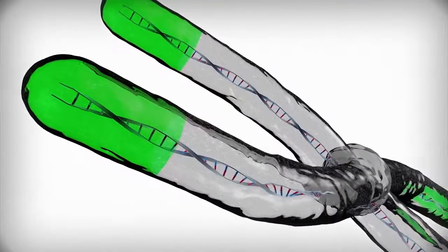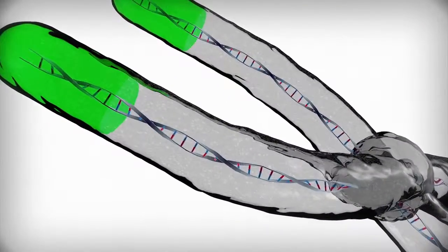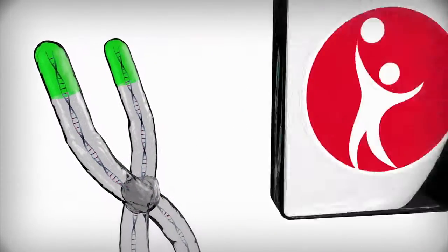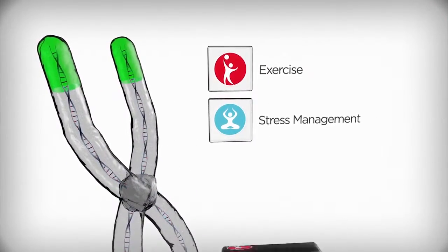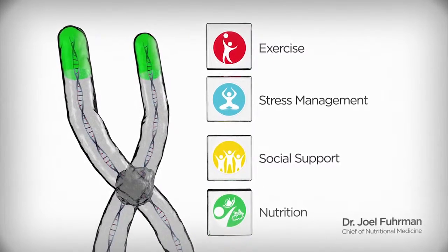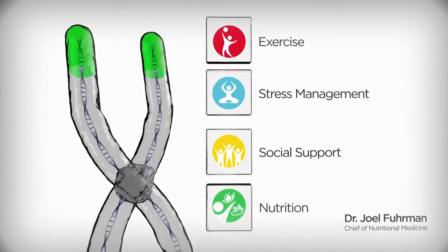We can slow down the natural rate of telomere shortening in most of our cells by adopting very specific lifestyle changes, including exercise, stress management, social support, and most importantly, by consuming nutrient-dense food as recommended by Dr. Joel Fuhrman, our Chief of Nutritional Medicine.